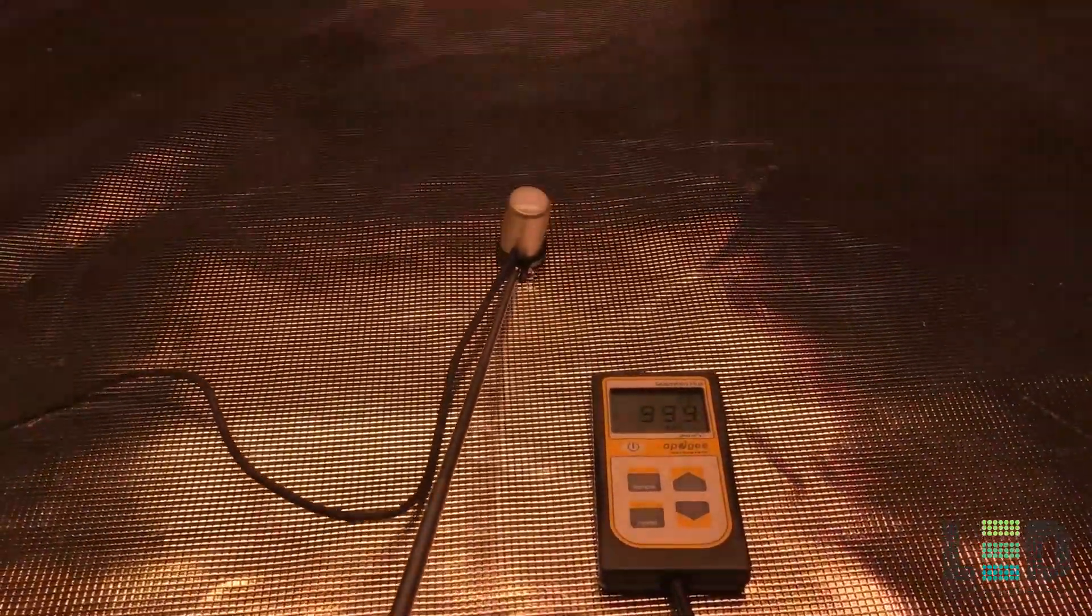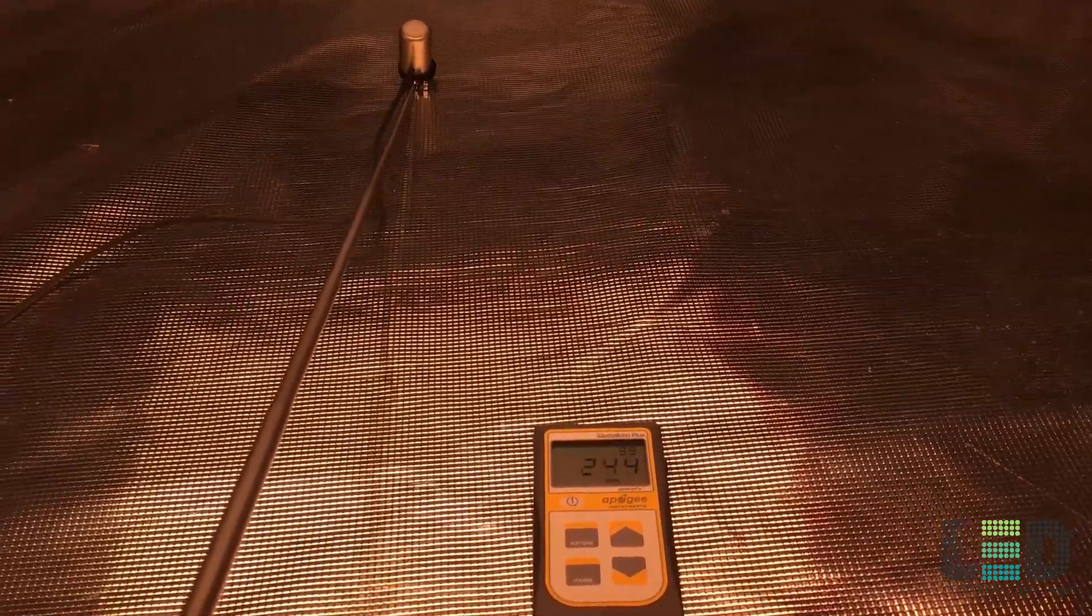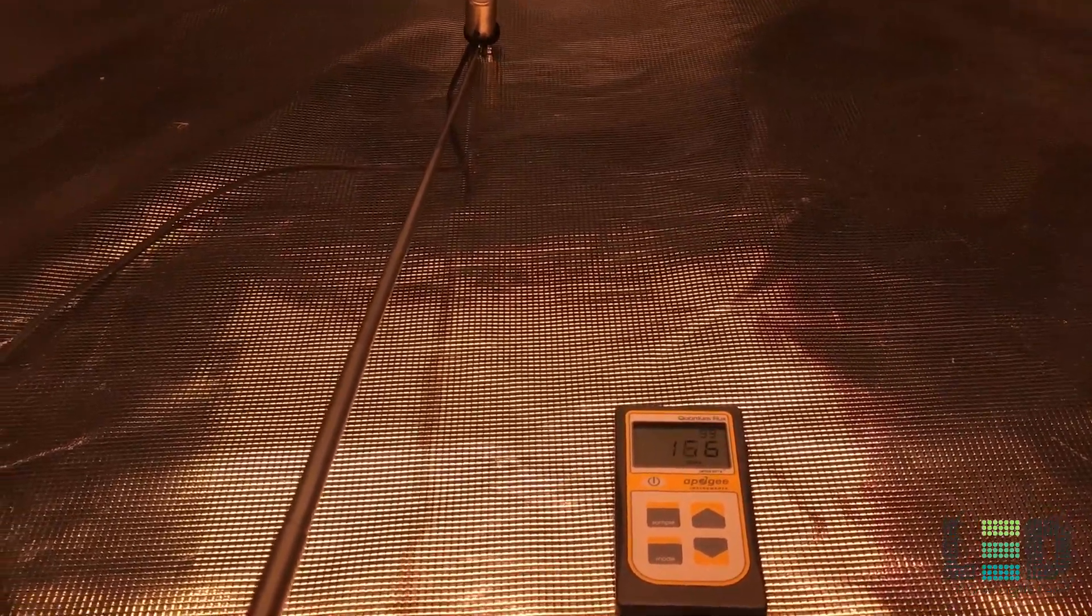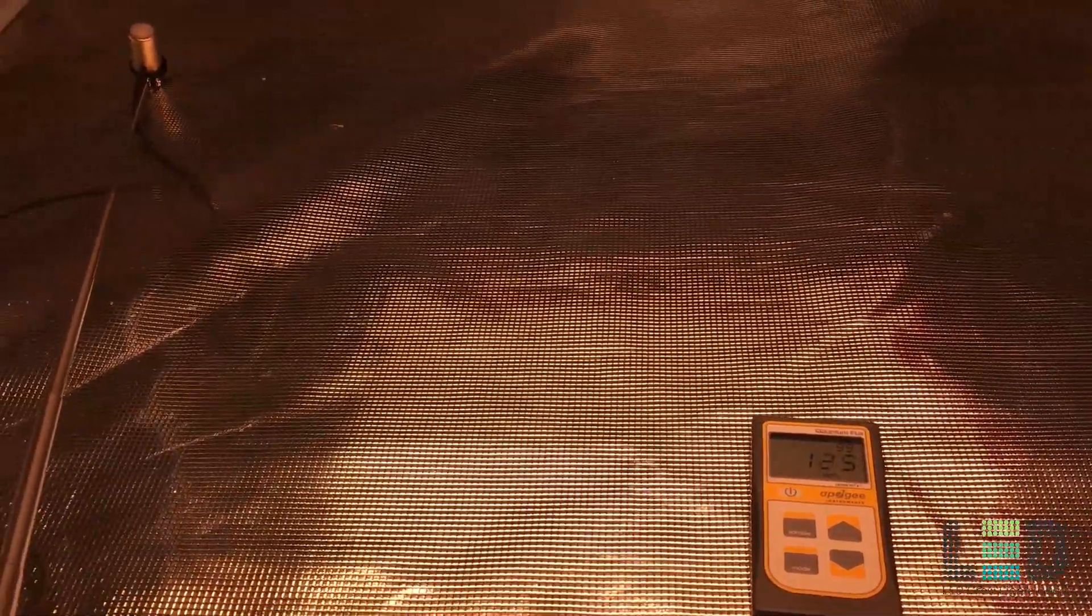And the next reading is going to be at 18 inches. So these are definitely flowering intensities. Just under 1,000 PPFD. And again, doing the same thing. Trying to keep it about 6 inches away from the back of the tent, the corner, and the side.